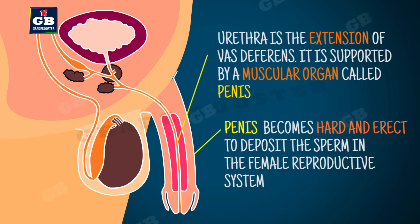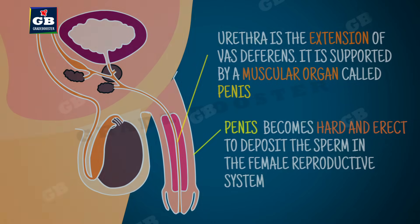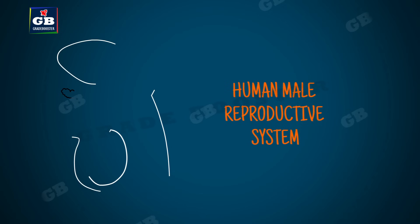The sperm from the vas deferens enters another duct called the urethra, which is surrounded and supported by a muscular organ called the penis. The penis is the organ that deposits the sperms in the female reproductive system; it becomes hard and erect during the time of mating.